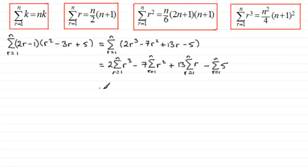Now we can pick up on the various formulae up here for each of these terms. For the first term, we've got 2 times the sum of r cubed. We've seen before that this is going to be n squared over 4, so we'll just put that in: n squared over 4 multiplied by n plus 1 all squared.